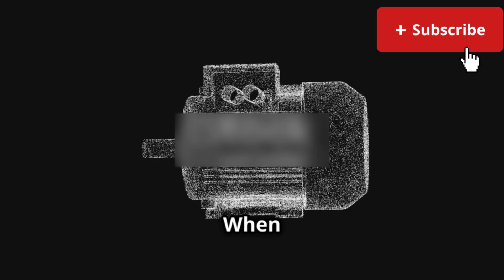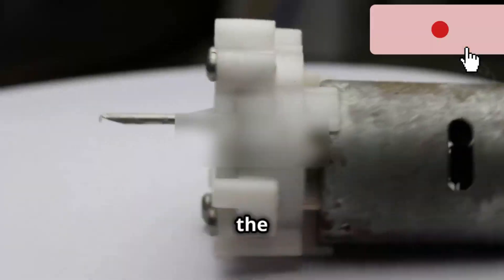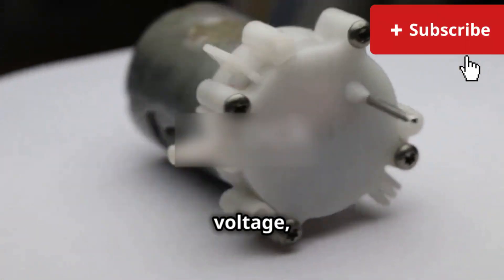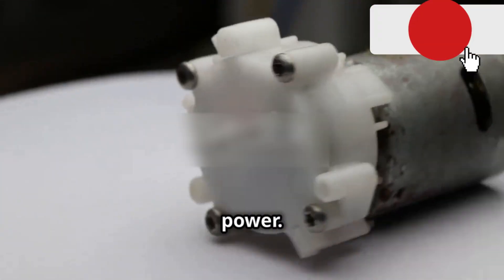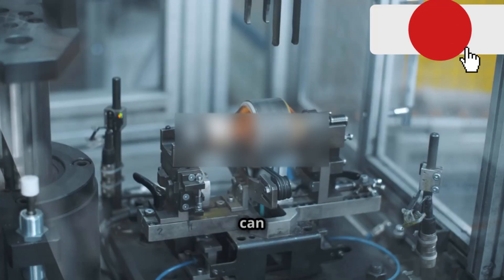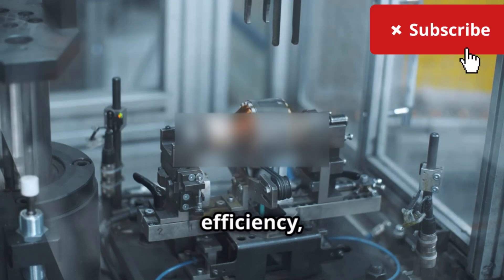When you increase the voltage, the motor will actually draw less current, but it will also produce more power. On the other hand, when you decrease the voltage, the motor will draw more current but will produce less power. This is a critical point to understand, as it can affect the motor's performance, efficiency, and even its lifespan.